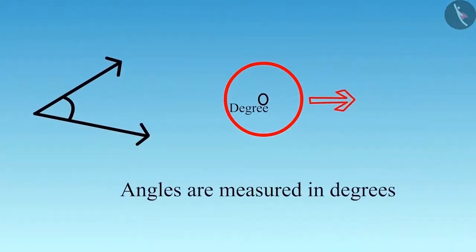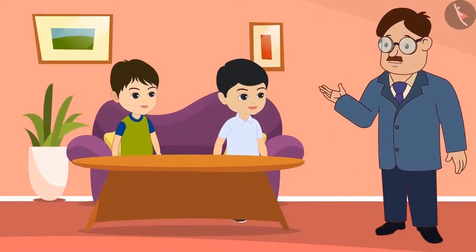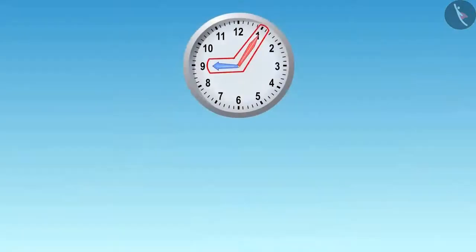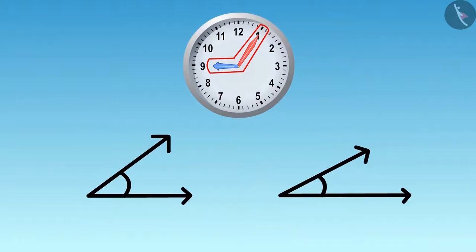Angles are measured in degrees, just like knowing the minutes or hours by looking at the clock. We can tell how many degrees the two sides of an angle are making by looking at them.